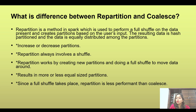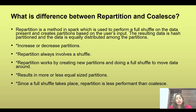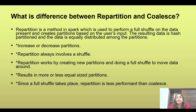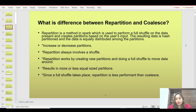When you talk about coalesce, if you want to go from five partitions to three, what it does is take the data from the two extra partitions and add it to the remaining three. So in coalesce, shuffle is much less. In repartitioning, all three partitions are recreated, so shuffle is more — making repartitioning less performant in terms of shuffle.